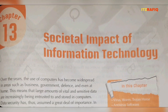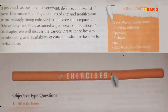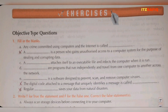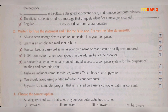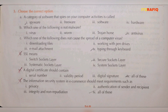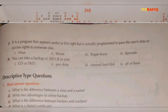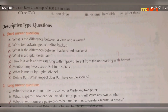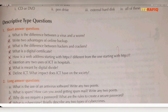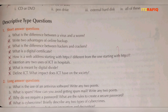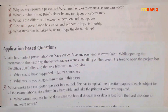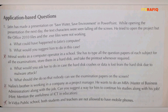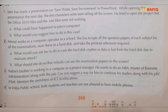Chapter 13: Social Impact of Information Technology. Fill in the blanks B, F, Z are not required. True and false C, D, E are not required. Choose the correct D, E, F, H are not required. From short answers, only A is required. From long answers, only A and B are required. From application based, questions 1, 2, 3, and 4 are not required.